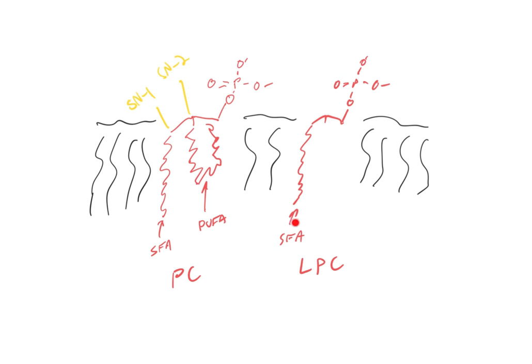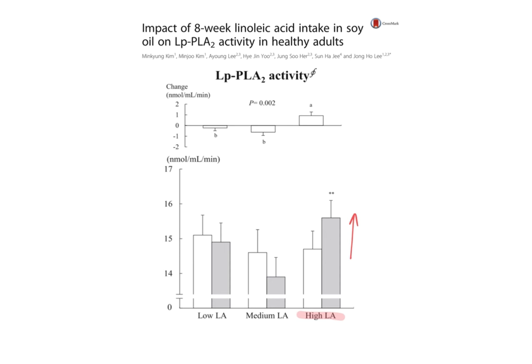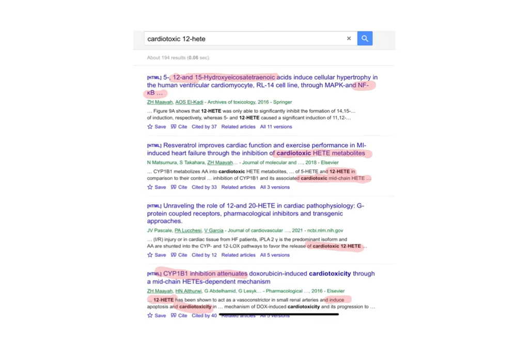That arachidonic acid can be lost from the membrane, leaving what is called a lysophospholipid. The PLA2 enzyme—controlled in part by the aryl hydrocarbon receptor—is what cuts the PUFA off here, creating the lysophospholipid. The 12-HETE is now floating free in solution; it's actually transferred in the blood by a protein called albumin. This PLA2 activity can actually be affected by dietary unsaturated fats.